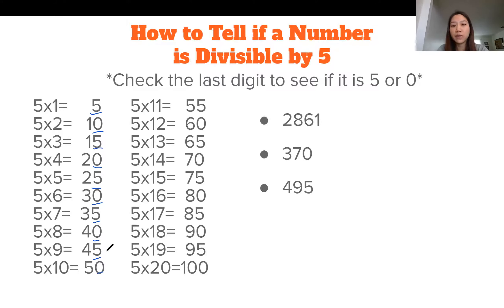So if you have a number like 2,861, all you have to do is check the last digit. Since it's a 1, it's not divided by 5, so that means that 2,861 is not divided by 5.